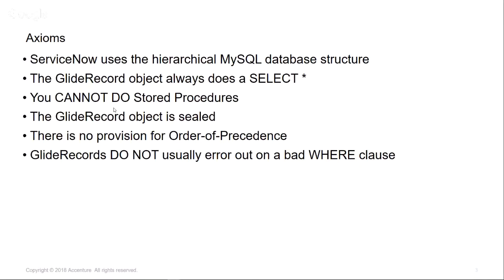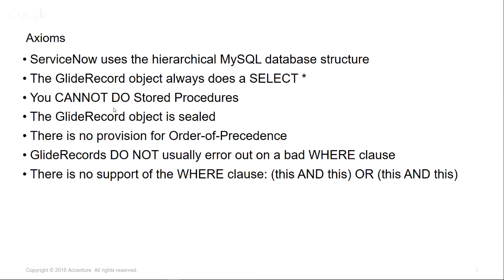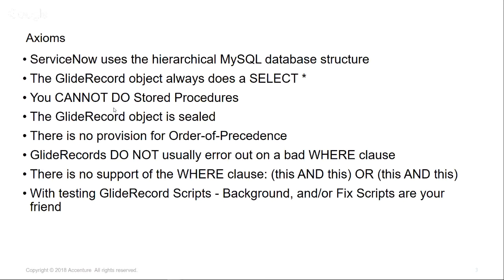GlideRecords do not usually error out on bad WHERE clauses — almost never. There are two exceptions, one of which has been suppressed, so there's only one now in a try-catch arena. If something bad does happen, GlideRecord eats the error and you get a more generic query back. There's no support of the WHERE clause for scenarios like 'this AND this OR this AND this' — that parenthetical problem is not available. The only way I've been able to do this is with two separate GlideRecords and then merging the results in script.